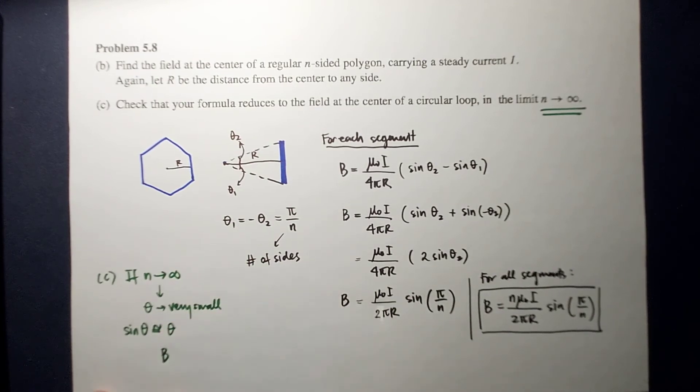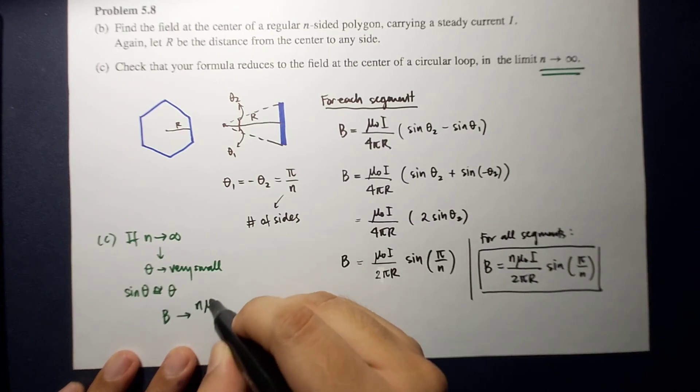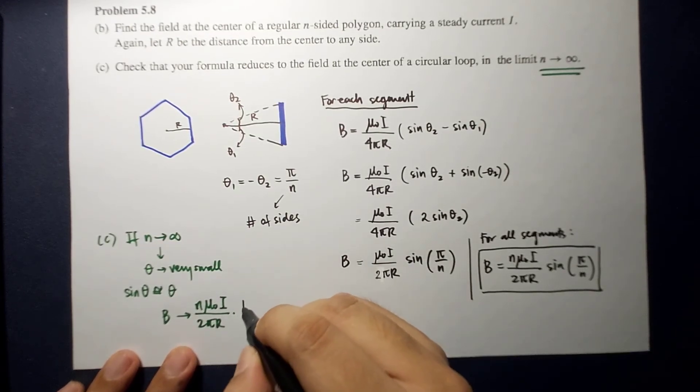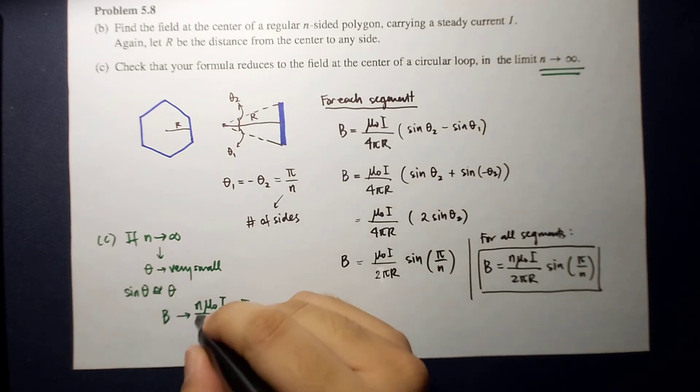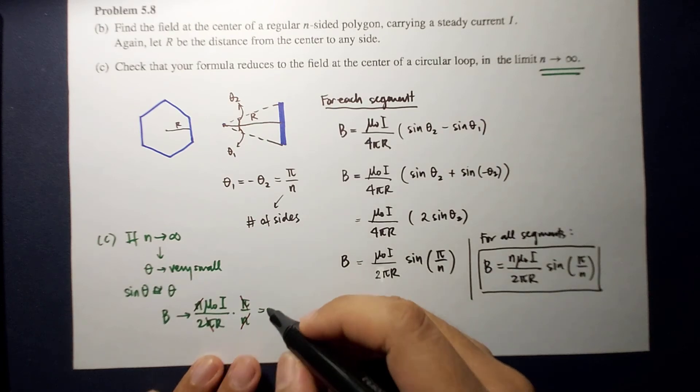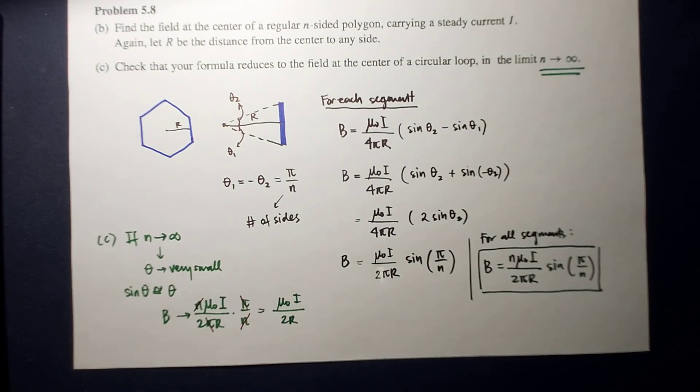So that means the magnetic field will now be reduced to n mu naught I over 2 pi r times pi over n, which is, so n cancels with n, so we now reduce to, sorry, pi is cancelled with pi, so this now reduces to mu naught I over 2 r.